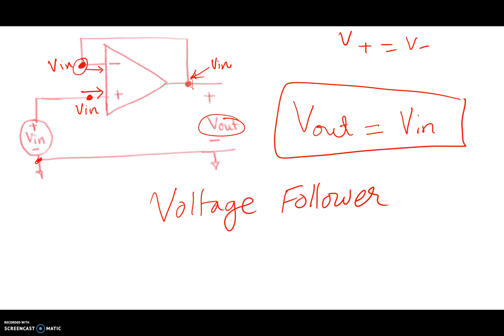So V out equals V in. There's absolutely no gain for this particular circuit, because we don't have any resistors here. So fairly straightforward circuit topology.